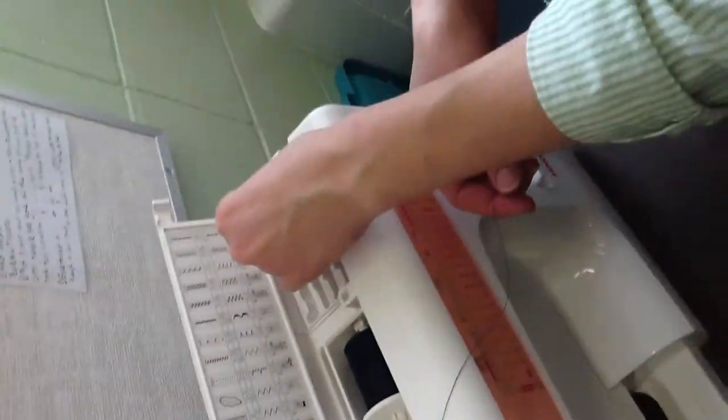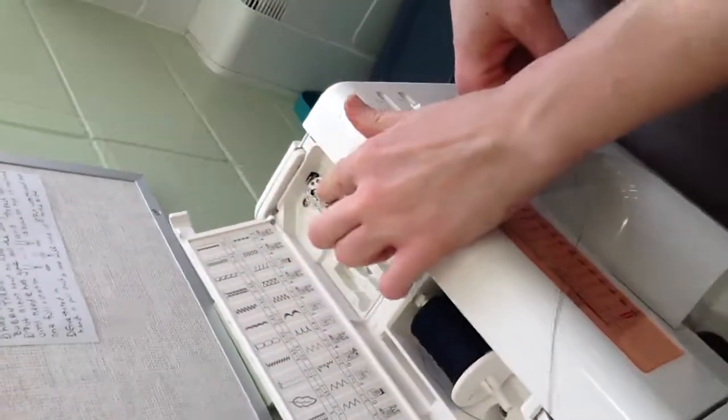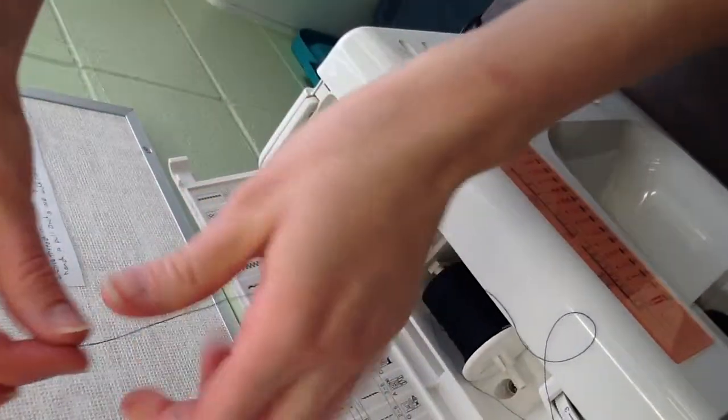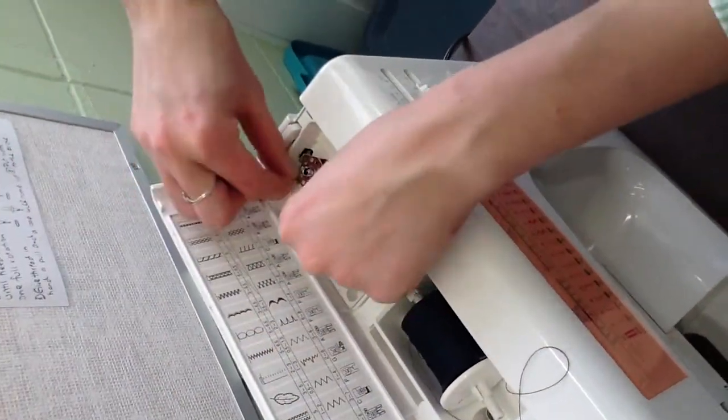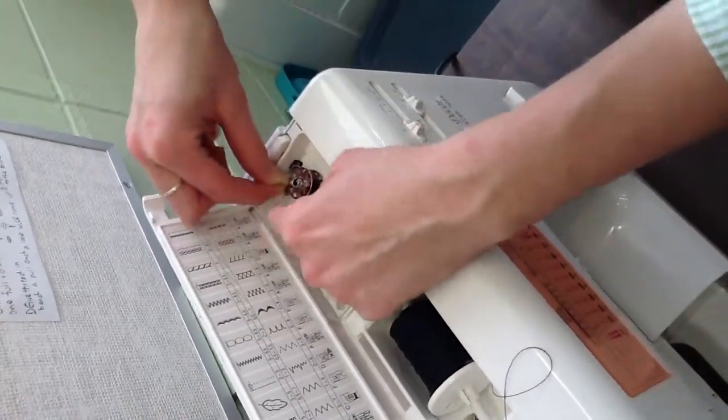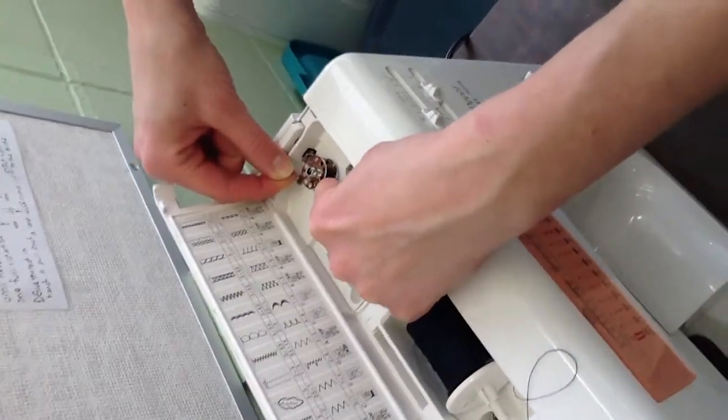Then we take our bobbin and we put it on the bobbin pin. Take the end of your thread, wrap it around clockwise, and then make sure you push this over.